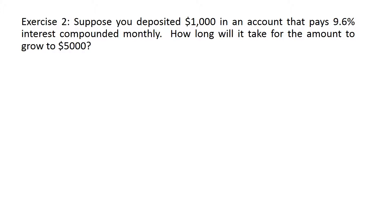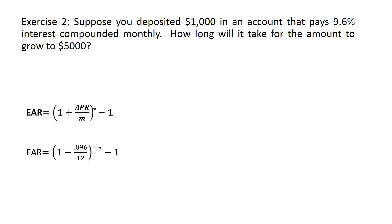Now let's look at another exercise of non-annual compounding. You might want to pause the video and try to solve it on your own using the effective annual rate equation, then come back and check your answer. Exercise two says suppose you deposited 1,000 dollars in an account that pays 9.6% interest compounded monthly — how long will it take for the amount to grow to 5,000? Monthly means 12 times a year, so I divide the APR by 12 and find the effective annual rate, which is 10.03% or 0.1003.